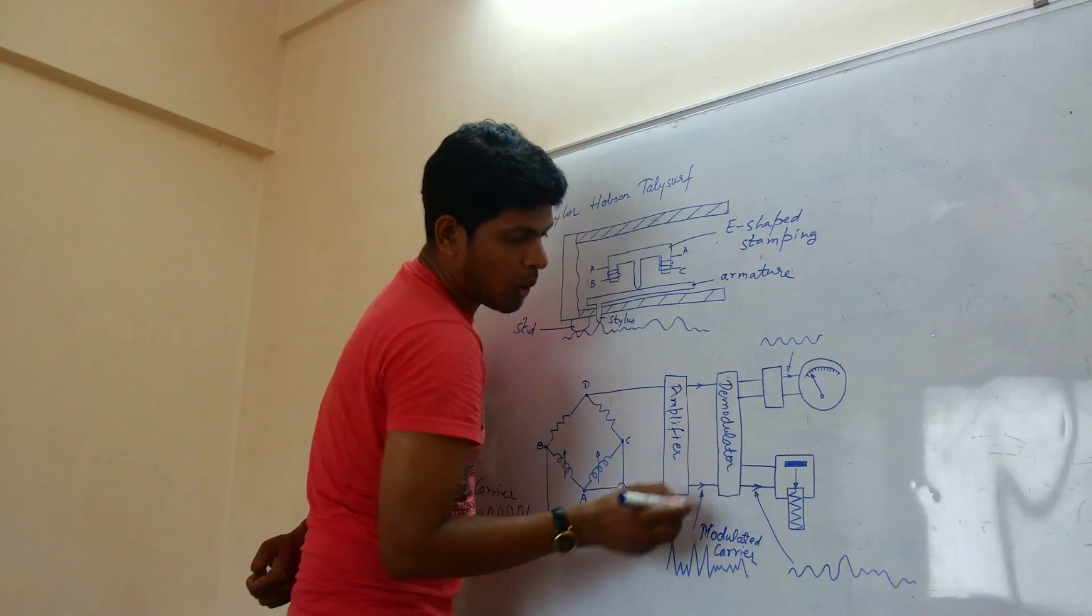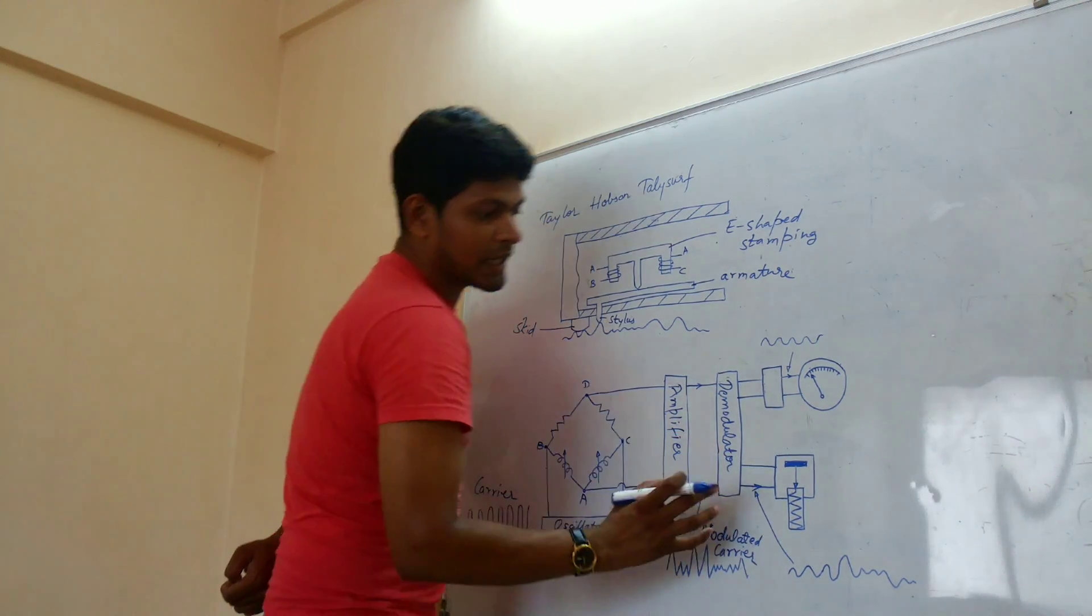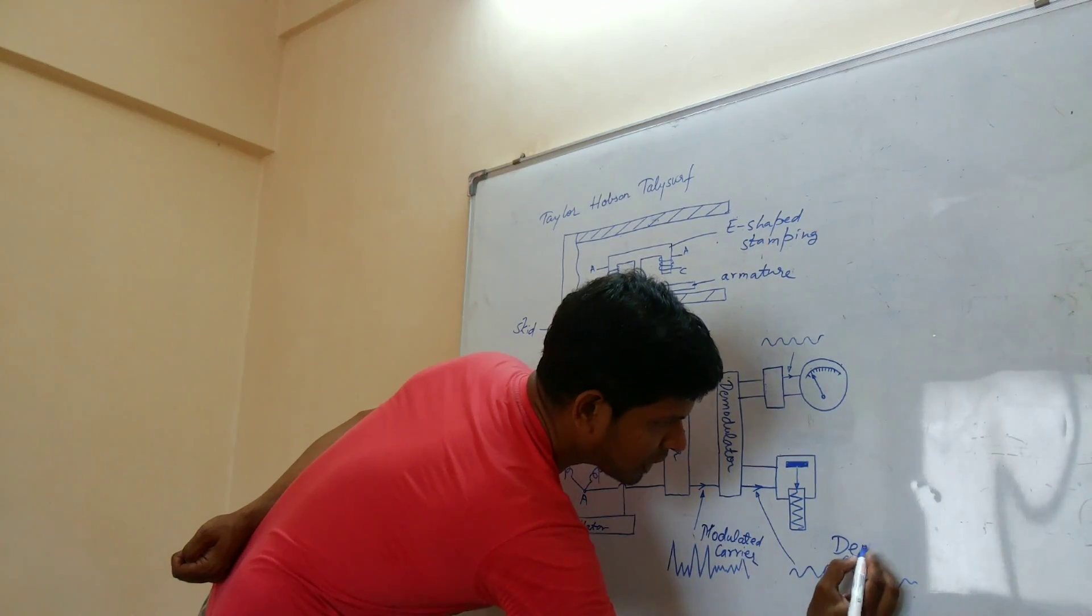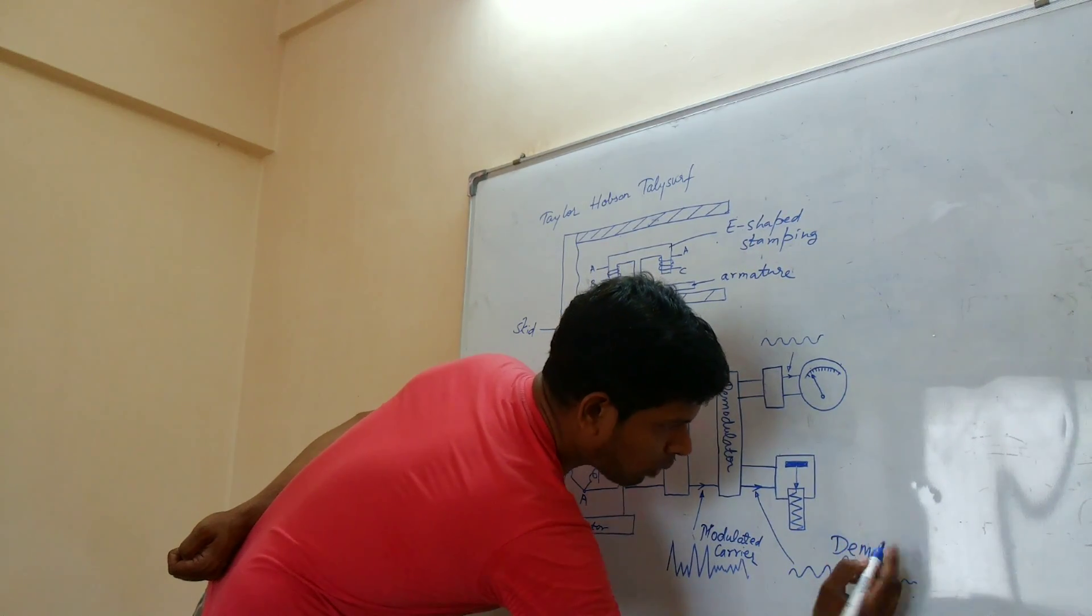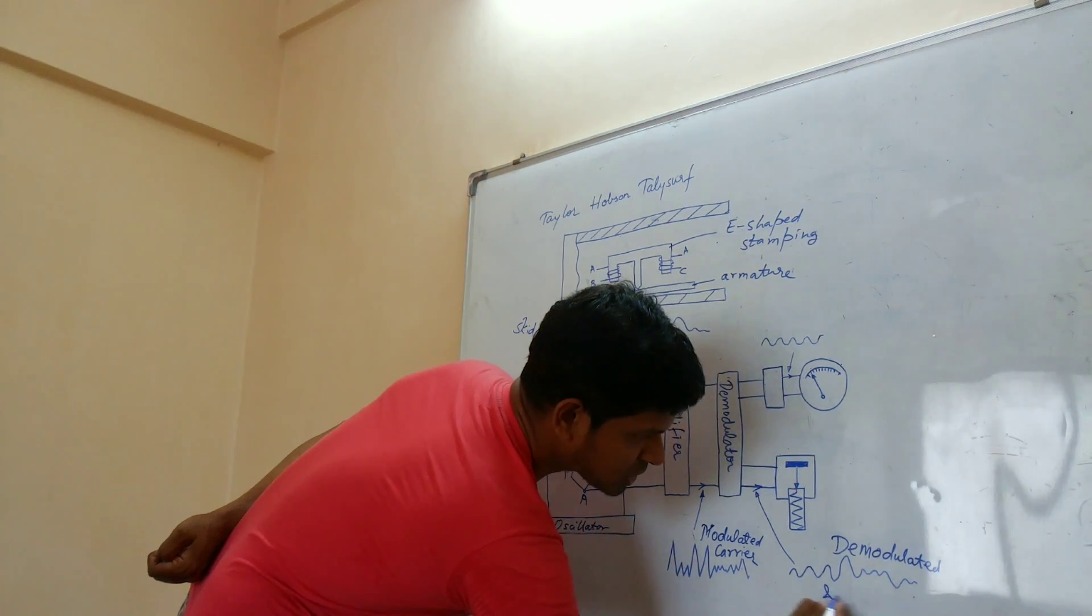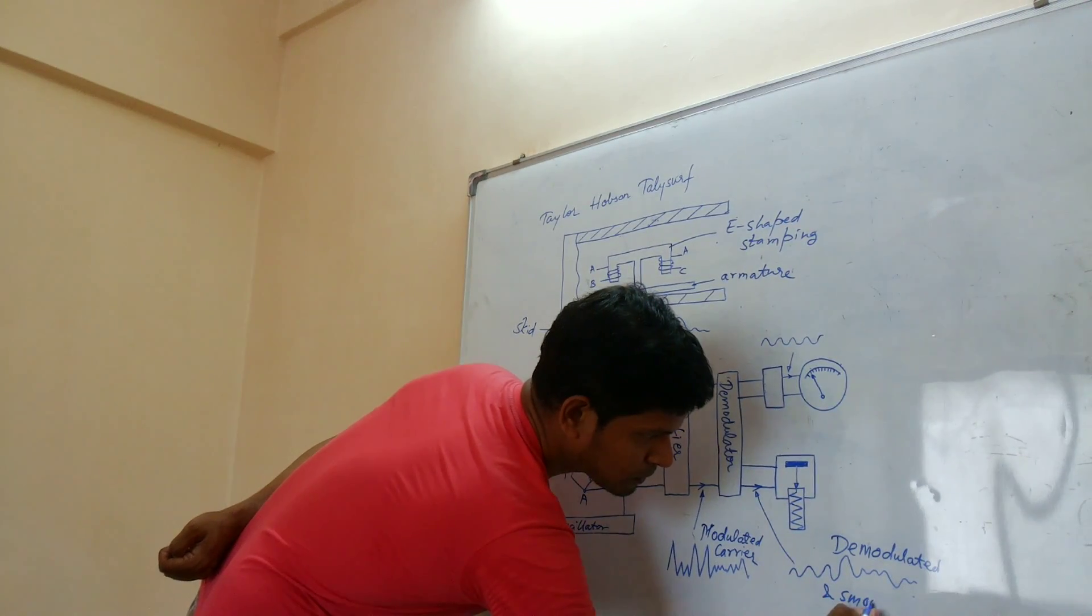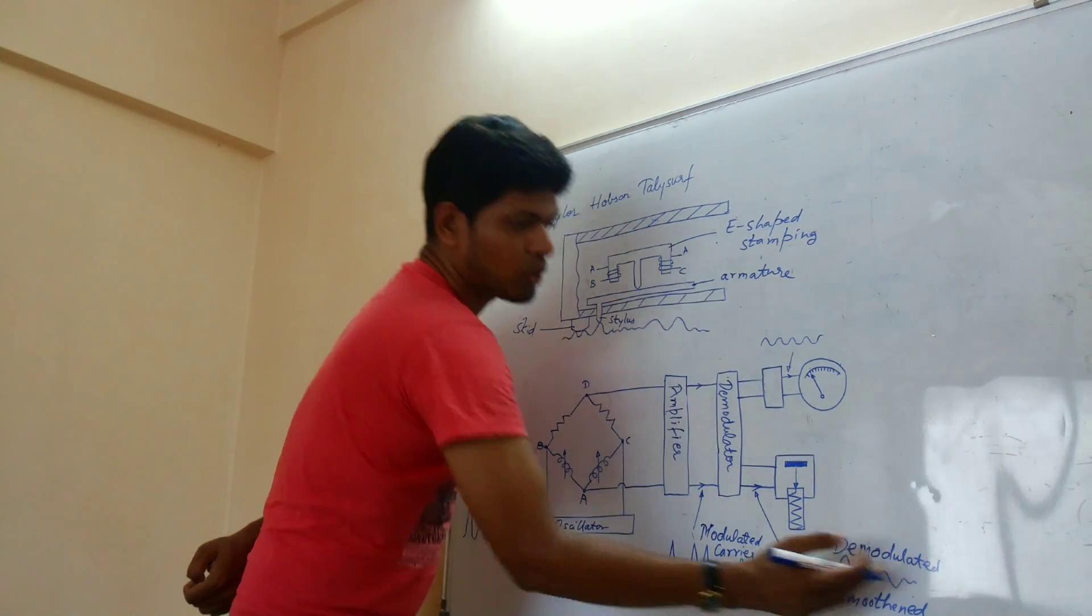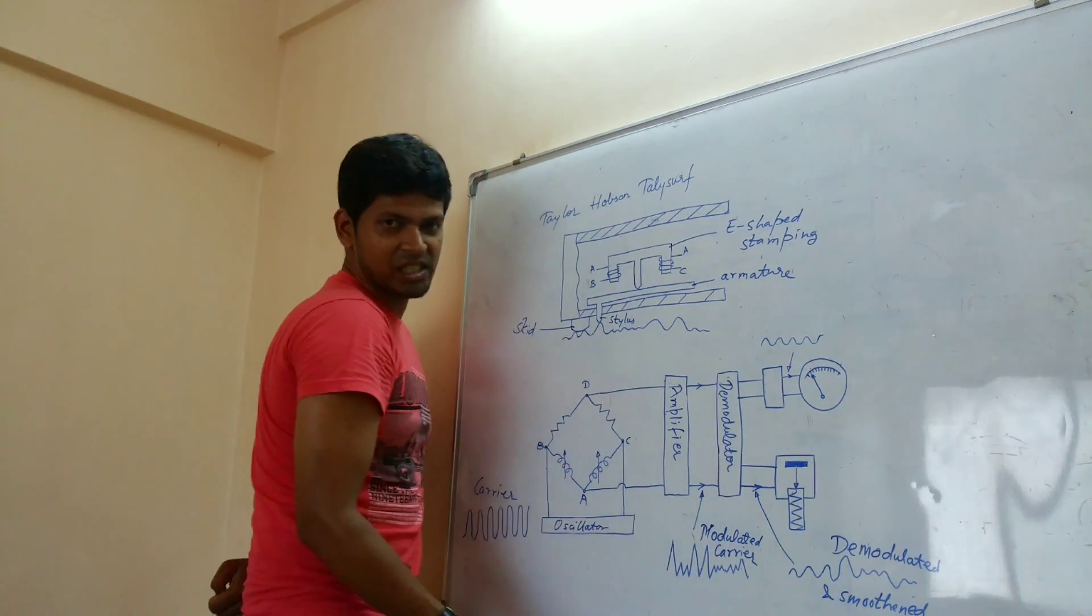Demodulator, where the carrier gets demodulated and smoothened. So demodulated and smoothened signal. So you get demodulated and smoothened signal.